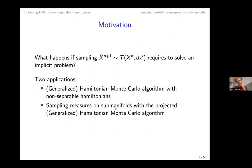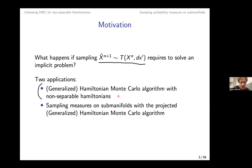We are generally interested in situations where applying the Markov kernel T involves an implicit problem to solve. This implies difficulties: the implicit problem may have no solution or many solutions, which affects the quality of the algorithm — in particular whether it is biased or not. I have in mind two situations: using Hamiltonian Monte Carlo with a non-separable Hamiltonian, and sampling measures on sub-manifolds with the projected HMC algorithm.